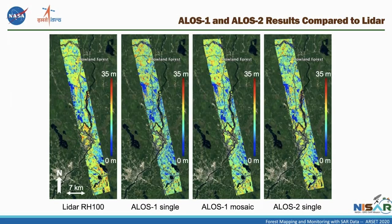You can do this for ALOS-1 images and for making a mosaic of images — accuracy improves as you increase the number of scenes added to the data. ALOS-1 flew in the 2000s; more recently ALOS-2 has been flying and ALOS-4 will be forthcoming. ALOS-2 was advantageous compared to ALOS-1 because instead of a 46-day repeat period, ALOS-2 had a 14-day repeat period.